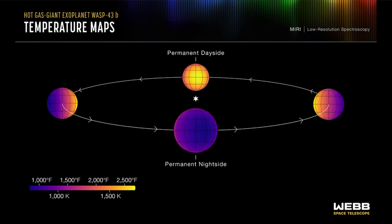So what do we see here? This is an illustration of the exoplanet's orbit. This is the exoplanet known as WASP-43b, and it is what we would call a hot Jupiter.